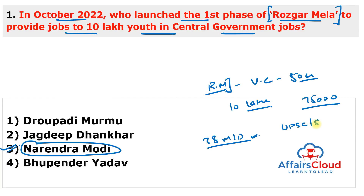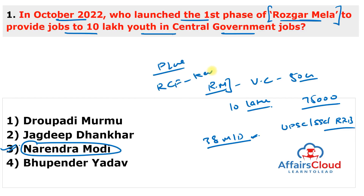The recruitment was done by 38 ministries and departments through agencies like UPSC, SSC, RRB and others. In Punjab, the job fair event was organized at Patiala Locomotive Works in Patiala and also at the Rail Coach Factory situated in Kapurthala.